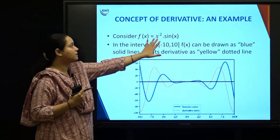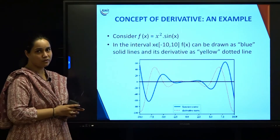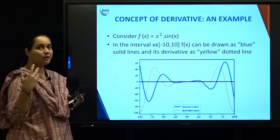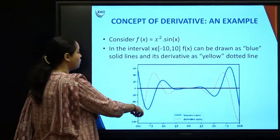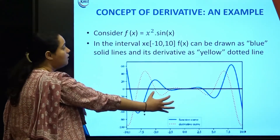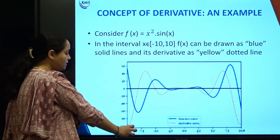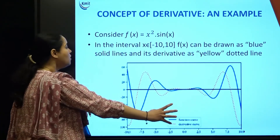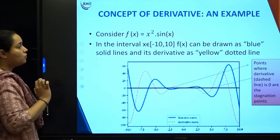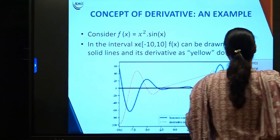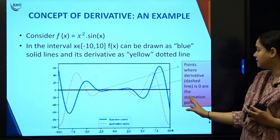Consider a mathematical function f(x) = x²·sin(x). The blue line in the figure is this mathematical function plotted. To find the maxima or minima of x²·sin(x), we plot its derivative. The orange dashed lines represent the derivative of this function. The range shown is from -10 to 10. The solid blue line is the function and the dotted orange line is the derivative. The points where the derivative line crosses zero are called stagnation points.